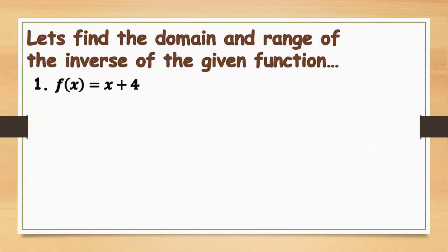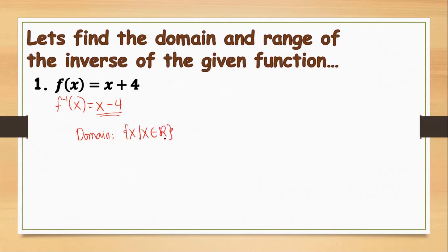So let's find the domain and the range of the inverse of the given function. The inverse of this is x minus 4. If we have this linear equation, the domain of it is all real numbers. So we can say that the domain is the value of x such that x is an element of a real number. And since there is no restriction, our range will be y such that y is an element of a real number. Since it is a linear function, the domain and the range are all real numbers.